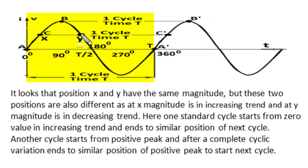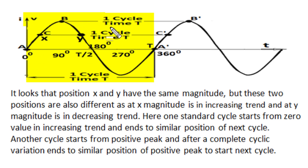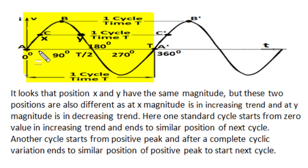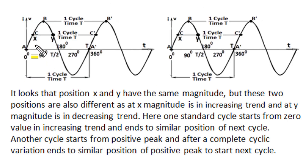A cycle is a set where all instantaneous values are unique and non-repetitive in nature. Looking at positions x and y, the magnitude of the sinusoidal quantity is the same, but at position x the signal is in an increasing condition whereas at position y it is in a decreasing condition, so their instantaneous positions are different. In this standard sinusoidal wave, a cycle is the minimum set of non-repetitive unique values that repeats itself, starting from zero in increasing order and ending at the point where the next start is identical to the previous cycle.